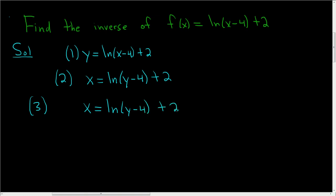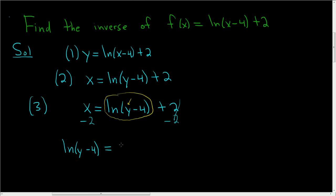We're looking for y, and y is trapped inside of the natural log right there. So it's a good idea to first isolate the natural log. We'll do that by subtracting 2 from both sides. So we end up with the natural log of y minus 4 on the left-hand side, equal to x minus 2.